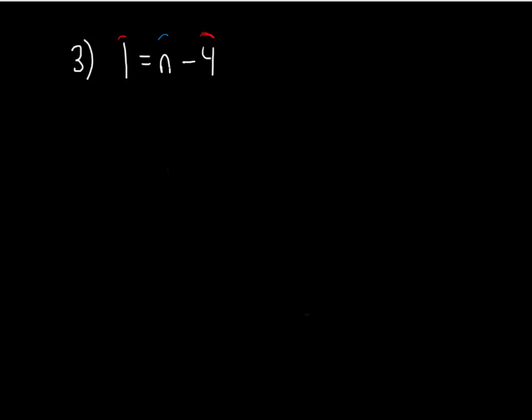Since I've got the unknown on the right, and negative 4 is with that unknown, that negative 4 is preventing me from having my unknowns by themselves. So how do I get rid of a negative 4? I add the opposite. So I'll add positive 4 to both sides.